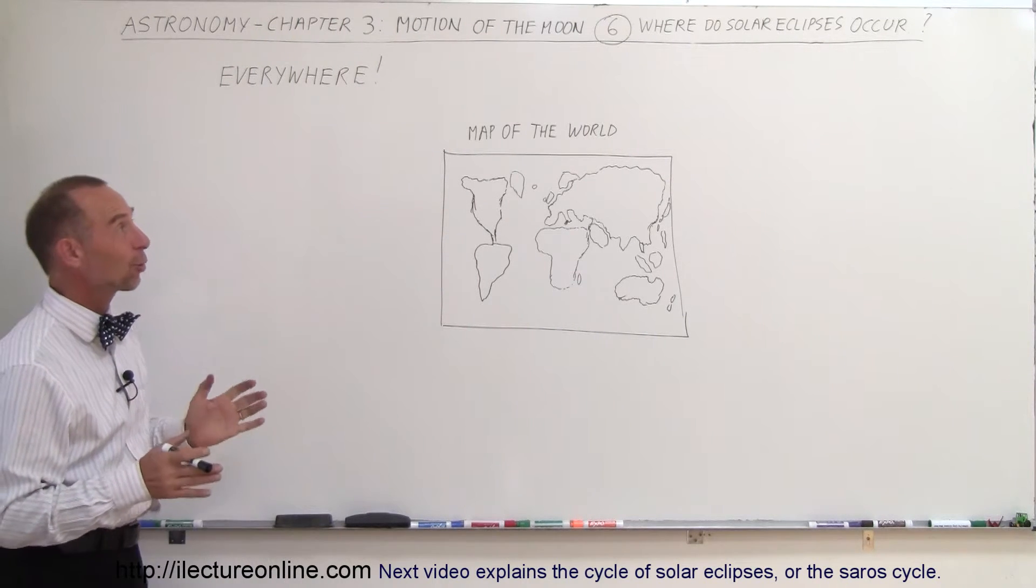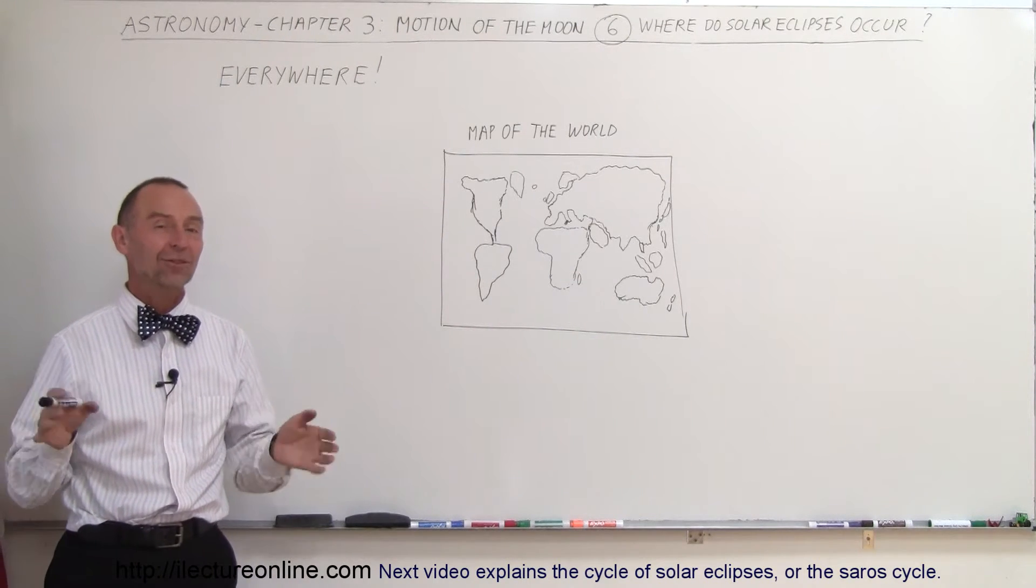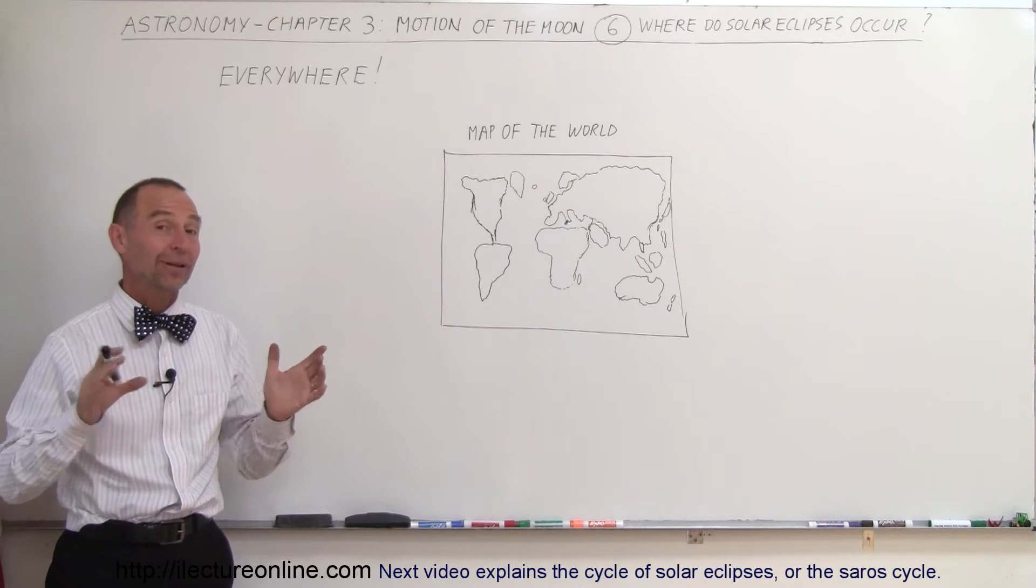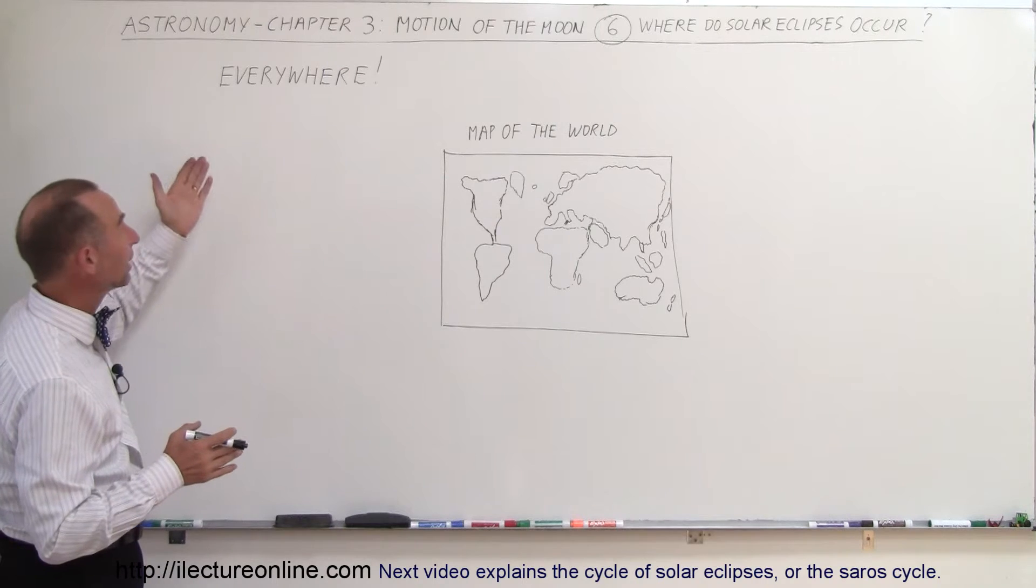Welcome to Electron Online, and now let's answer the question: where do solar eclipses actually occur? Do they only occur in certain parts of the world, or do they occur everywhere? And the answer is, in one word, they occur everywhere.